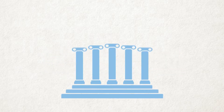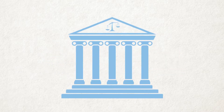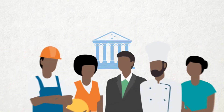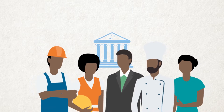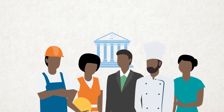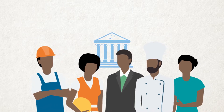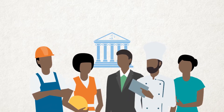States are obligated under international human rights law to protect anyone within their territory from human rights abuses committed by business enterprises. They must have effective laws and regulations in place to prevent and address business-related human rights abuses.